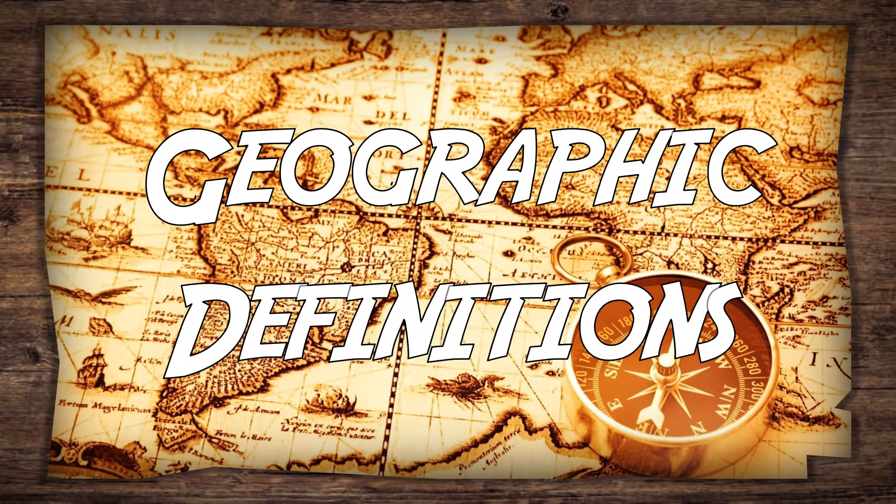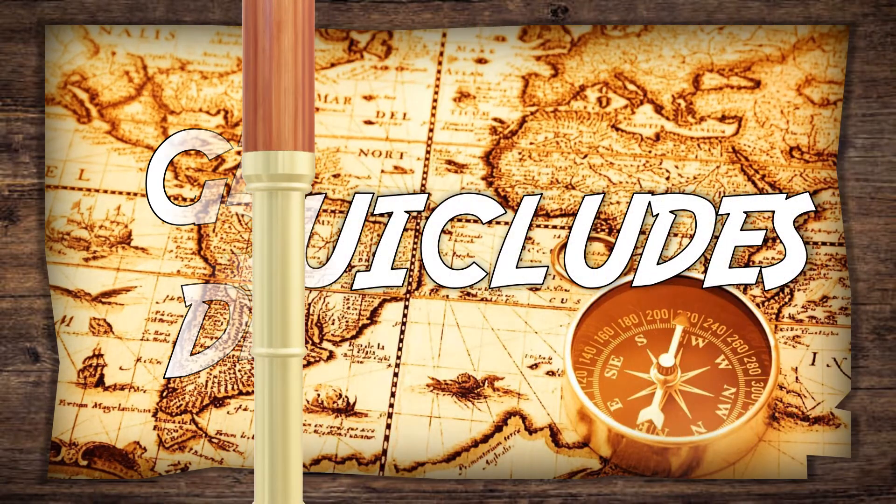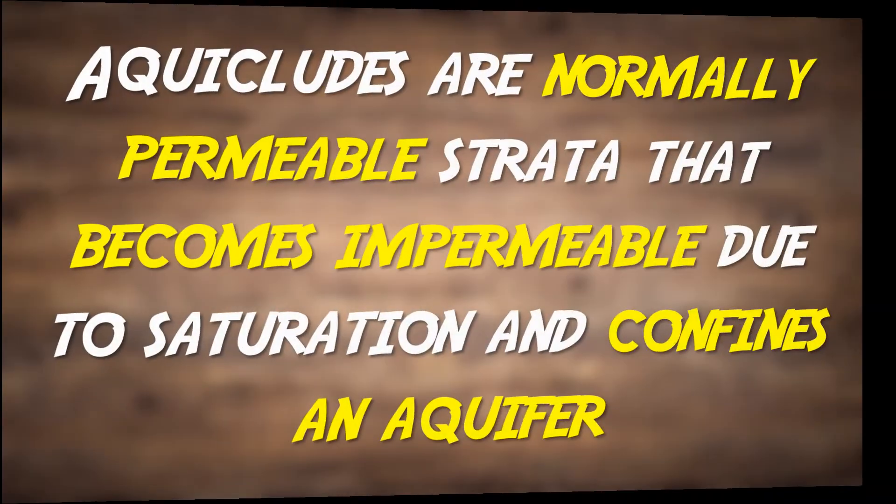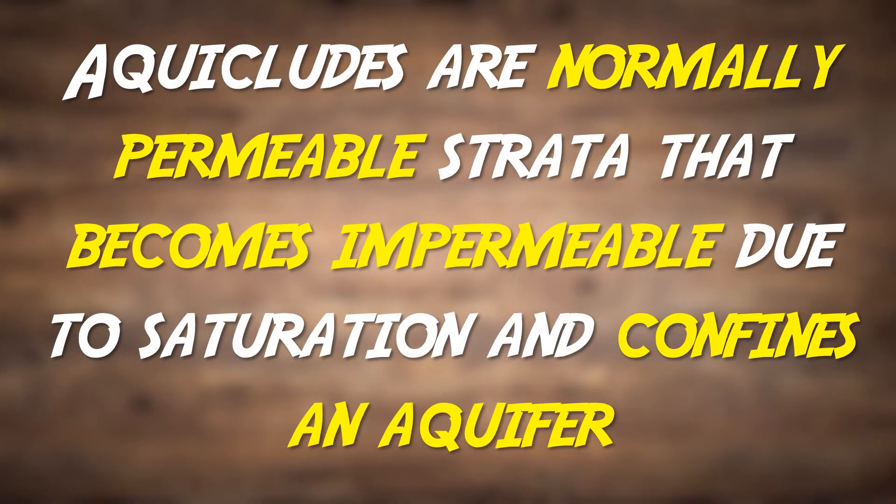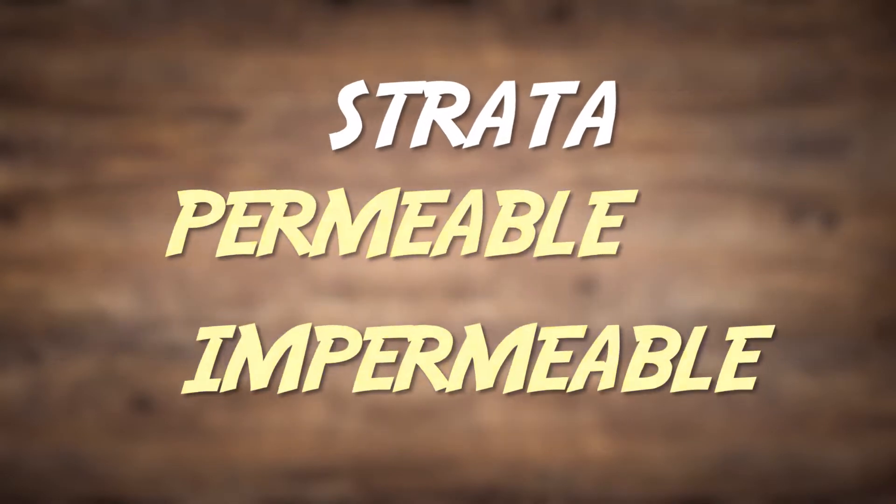Welcome to Geographic Definitions. Today we'll be defining aquacludes. Aquacludes are normally permeable strata that becomes impermeable due to saturation and confines an aquifer. To understand this, we first need to define three key terms.